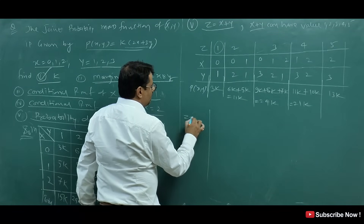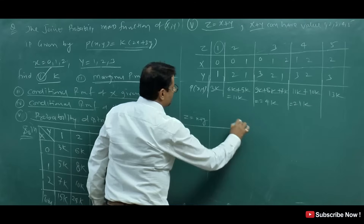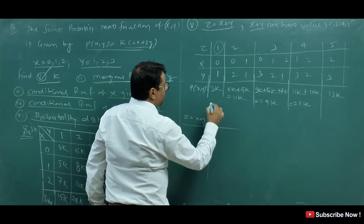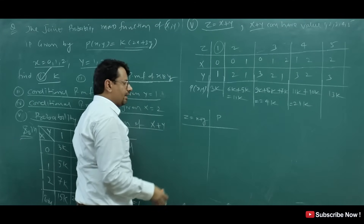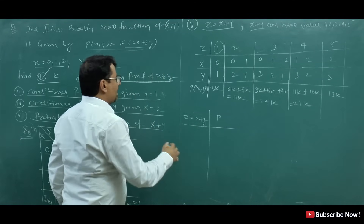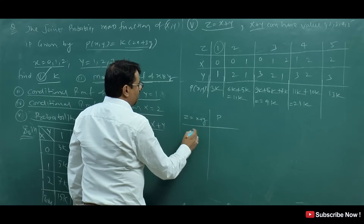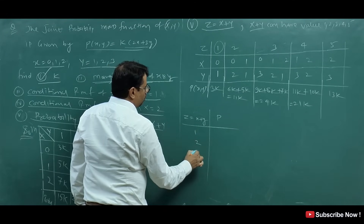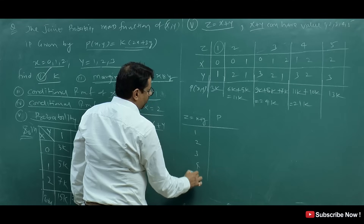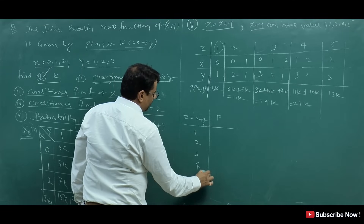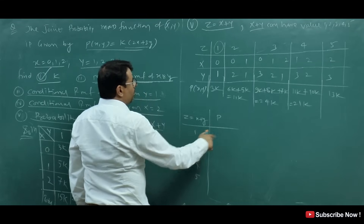So Z equals X plus Y. Here are the Z values 1, 2, 3, 4, 5 with their corresponding probabilities written as the probability distribution table.